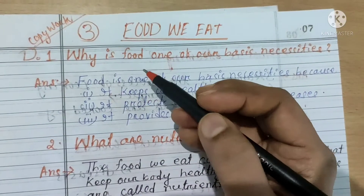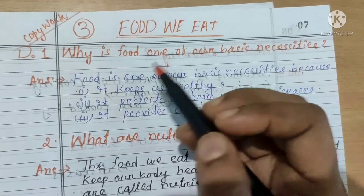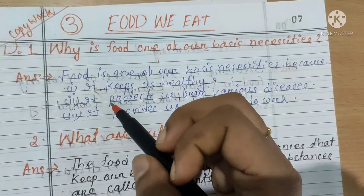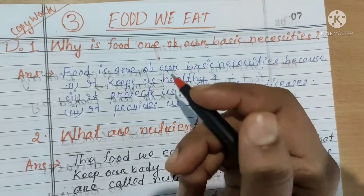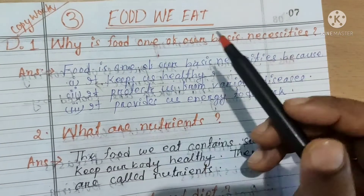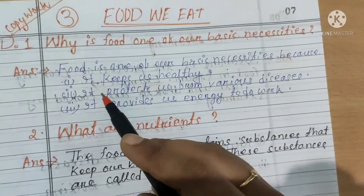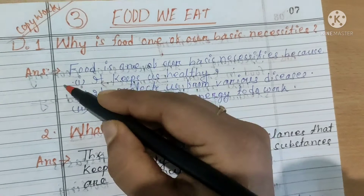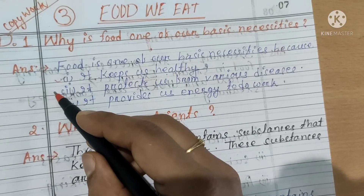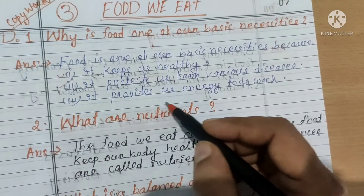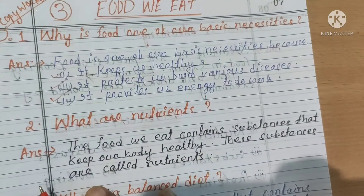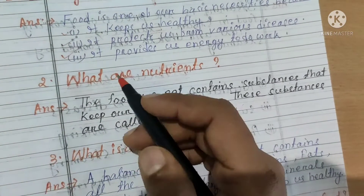Our first question is: why is food one of our basic necessities? Food is one of our basic necessities because it keeps us healthy, it protects us from various diseases, and it provides us energy to do work.